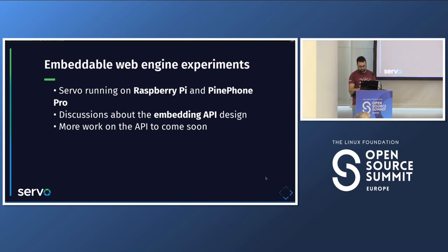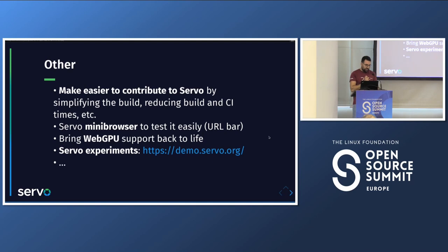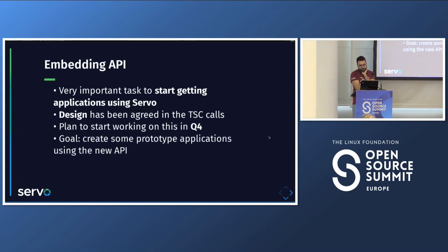Many other things have been happening: we've made it easier to contribute by reducing build times, reducing CI times, and simplifying the build process. We now have a mini-browser with a URL bar and a go button for testing. We brought WebGPU support back to life — it had not been upgraded for a while — done by an external contributor. We have a demo page with experiments that all work with Servo, so you can see what Servo can do.